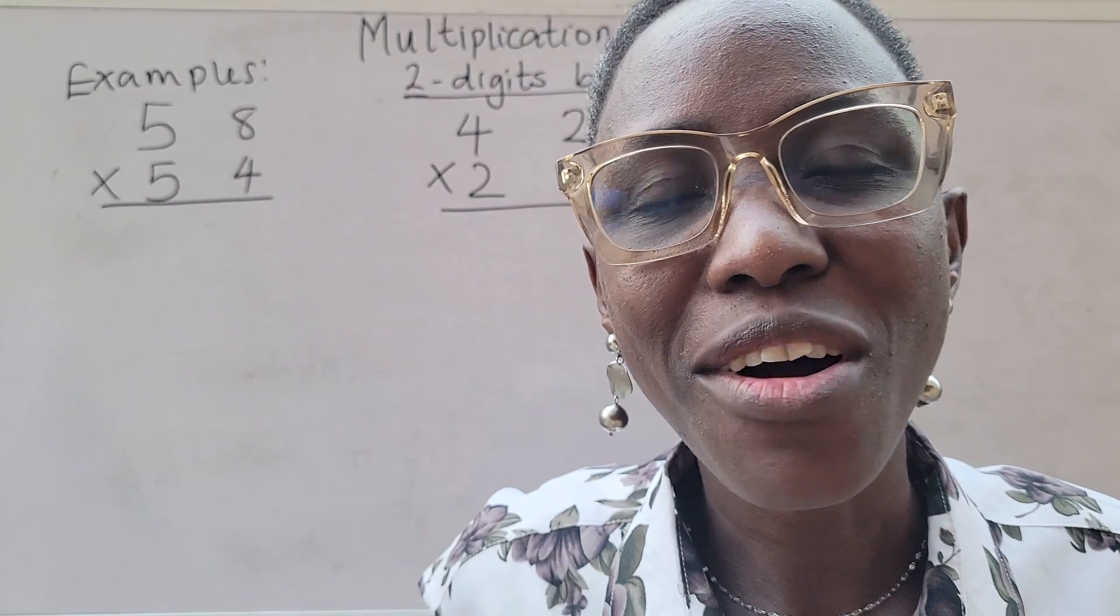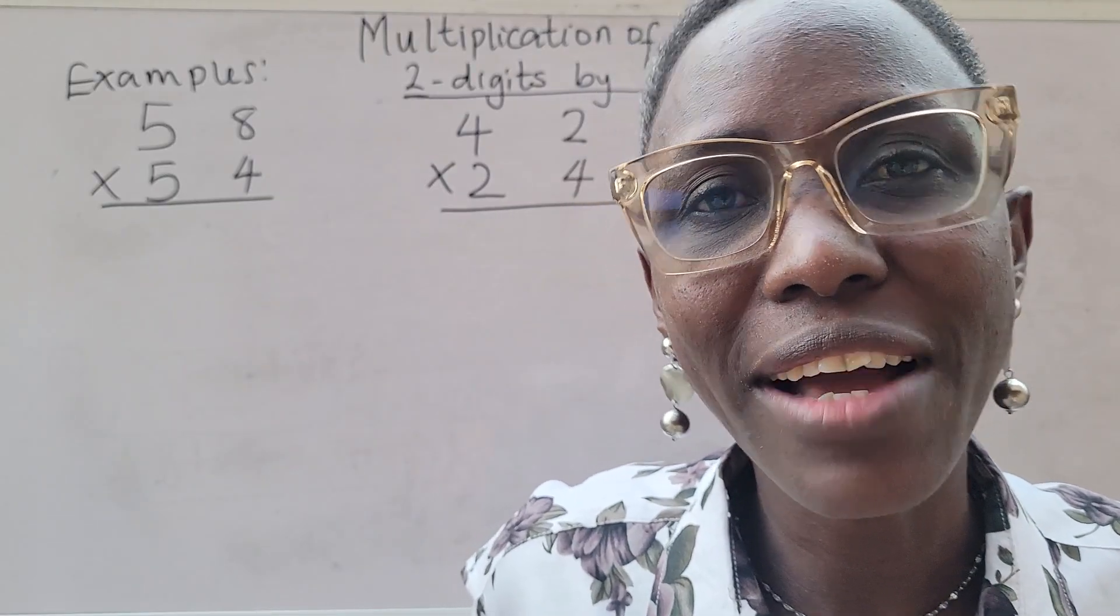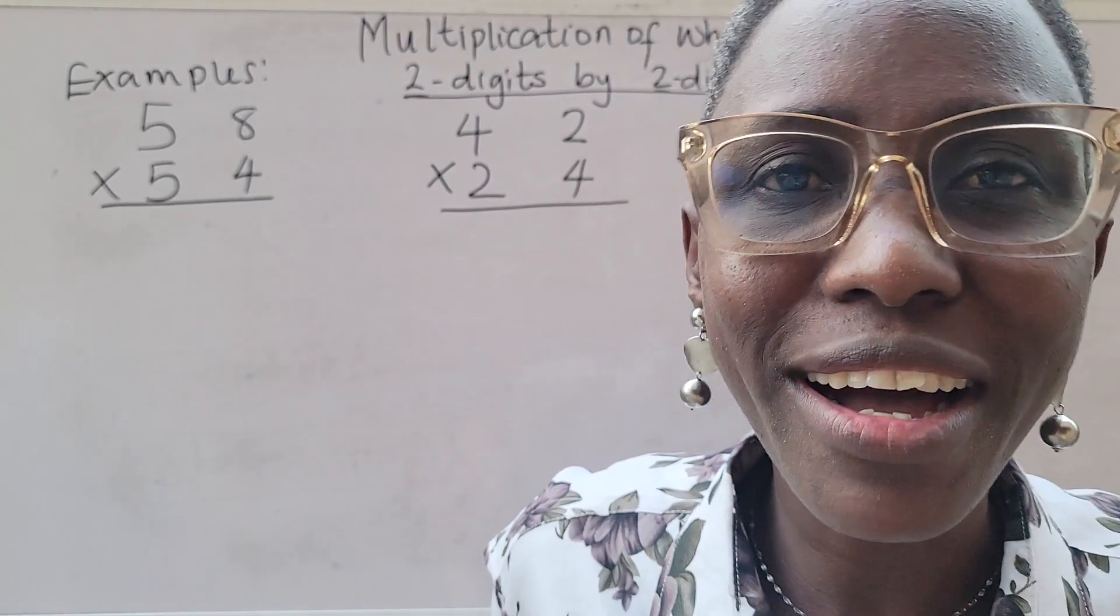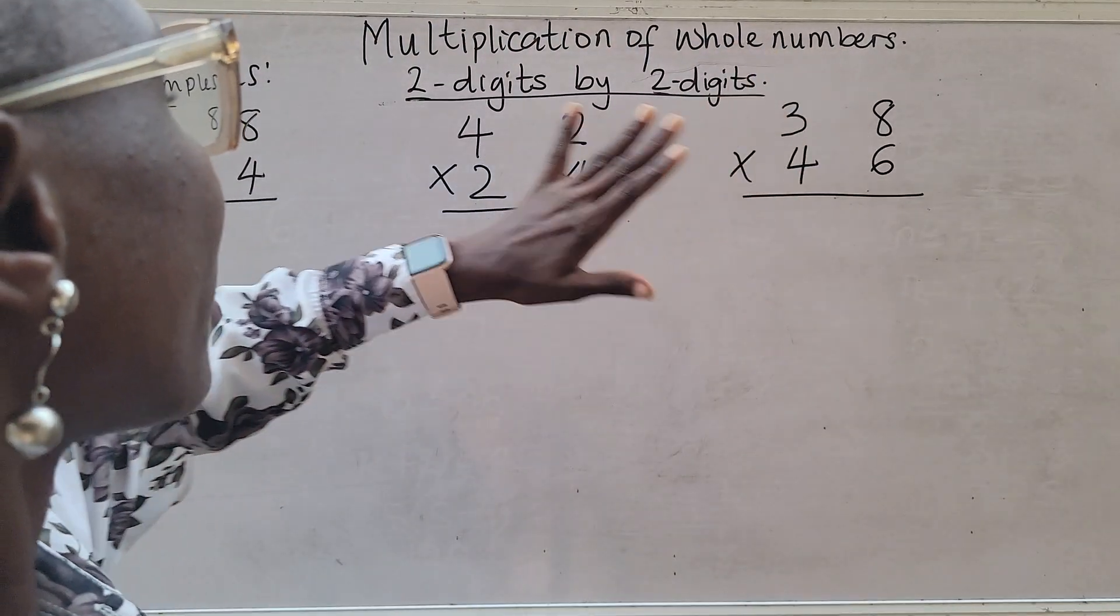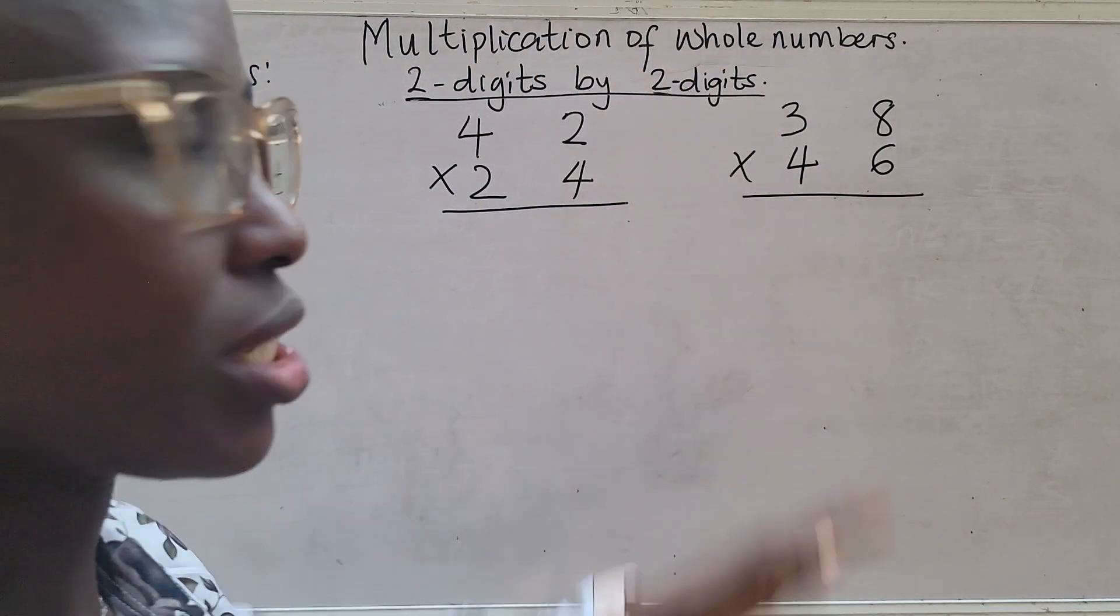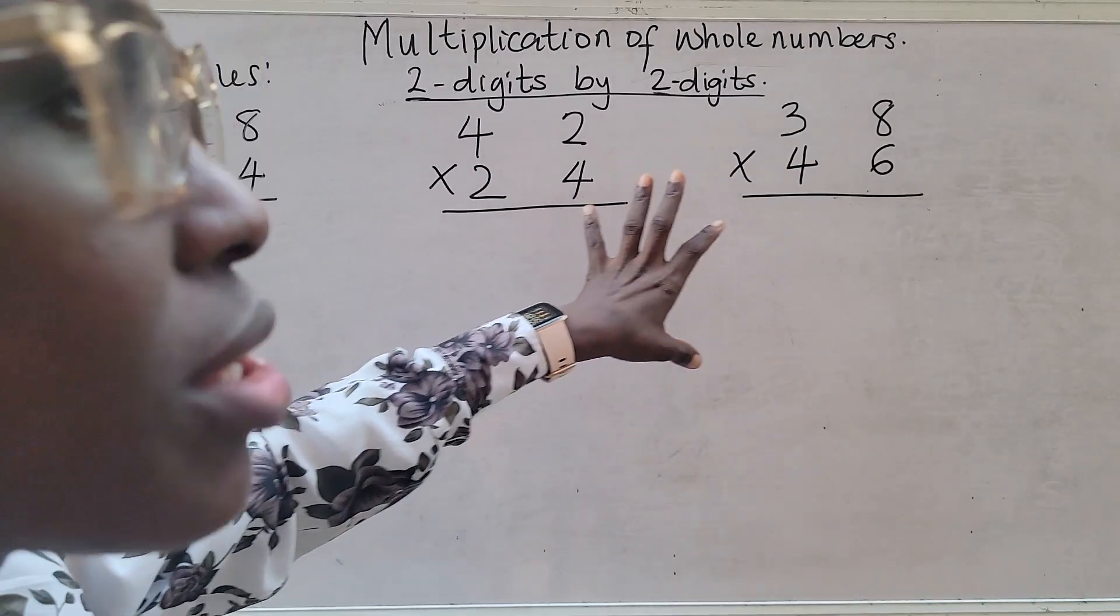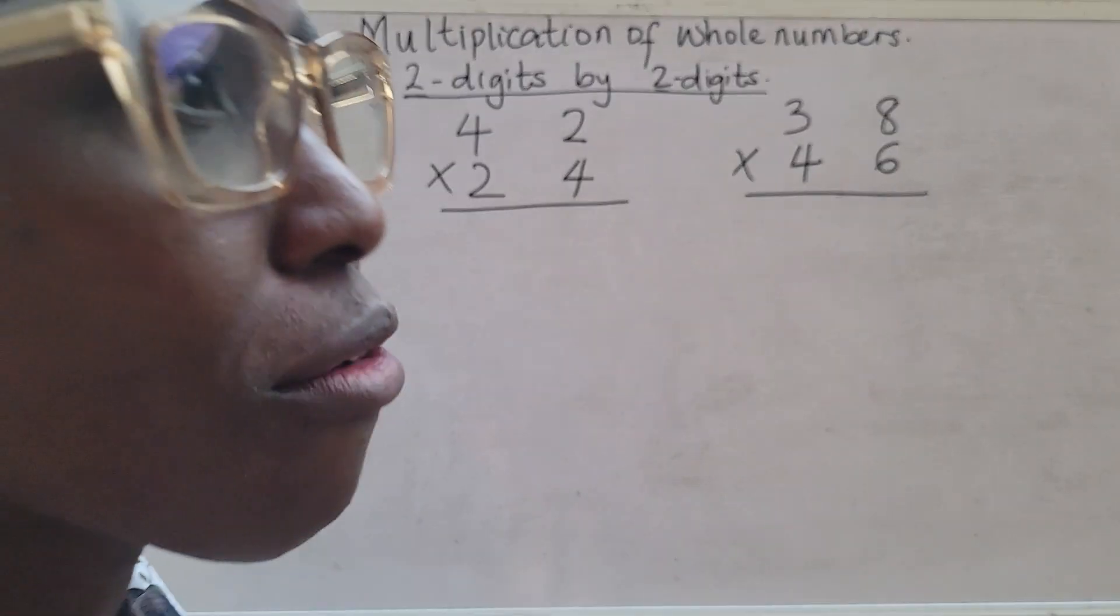I've come your way again with another video, and this time around the topic is multiplication of whole numbers, two digits by two digits. I have three examples on the board which we will go over.